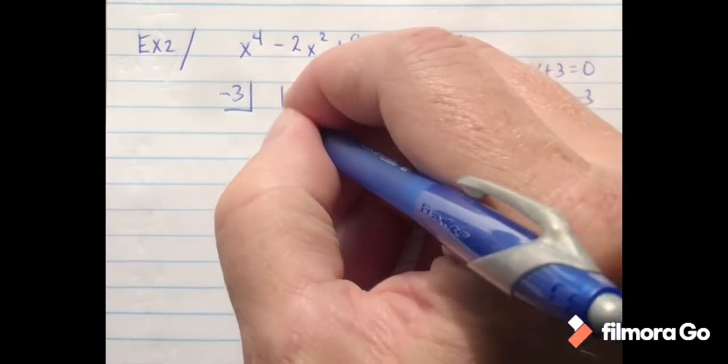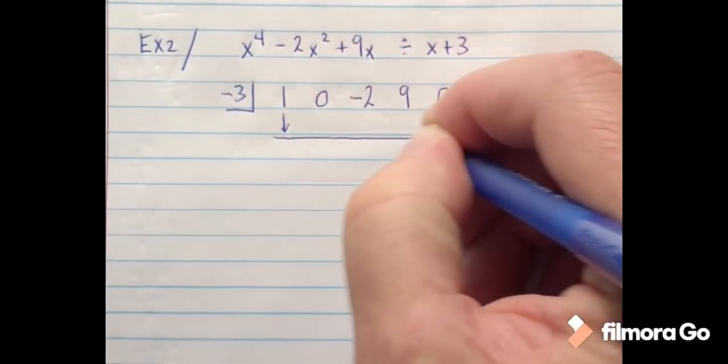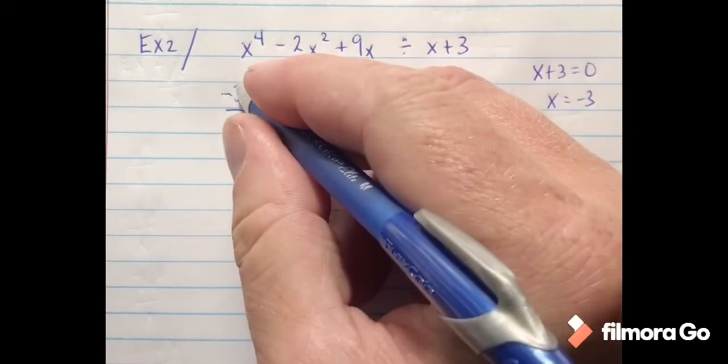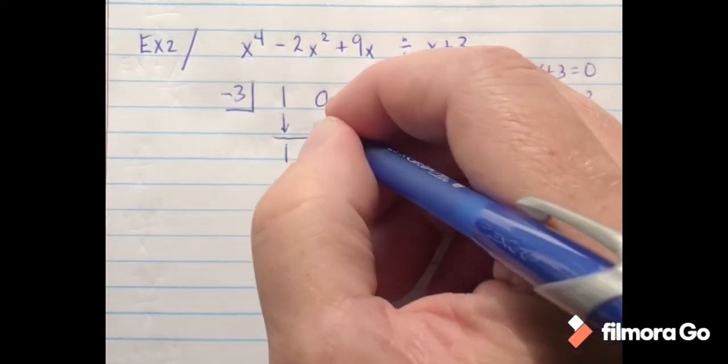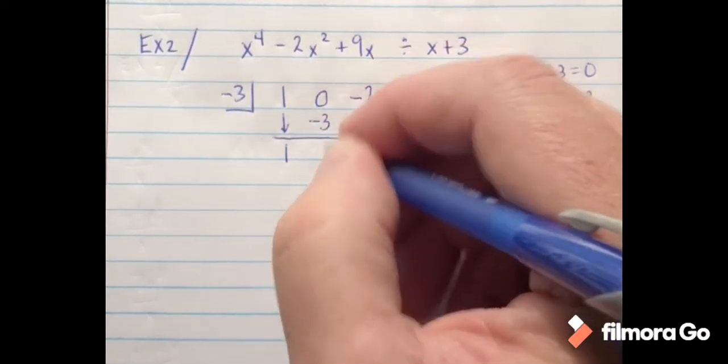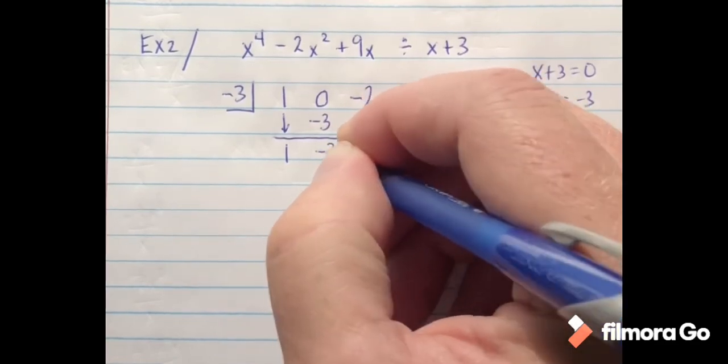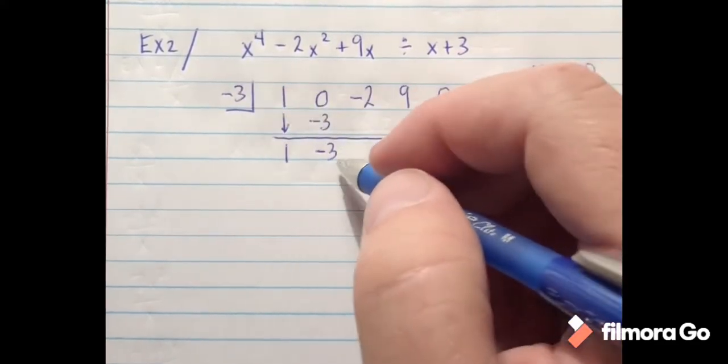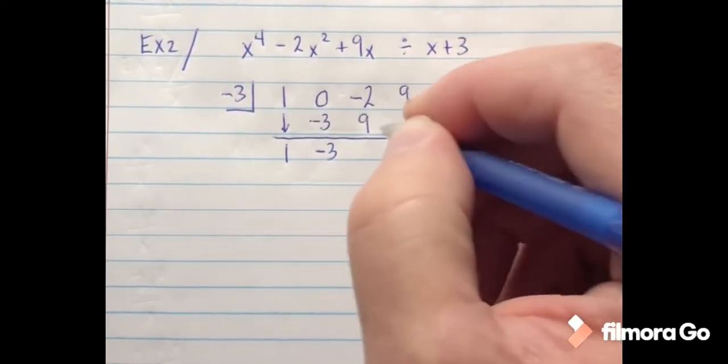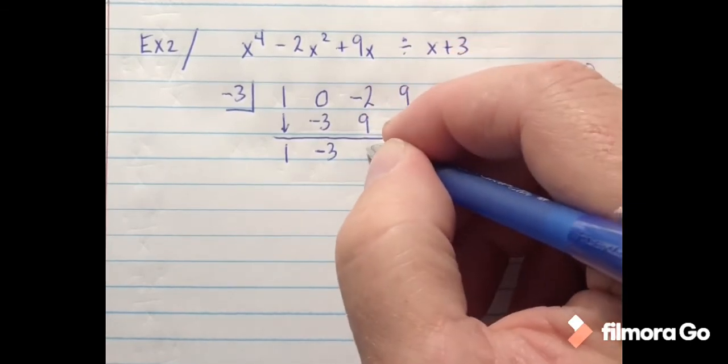Again I bring my 1 straight down. So 1, I multiply the box times that - that gives me negative 3. I add those together, I get negative 3. Negative 3 times negative 3 is positive 9.